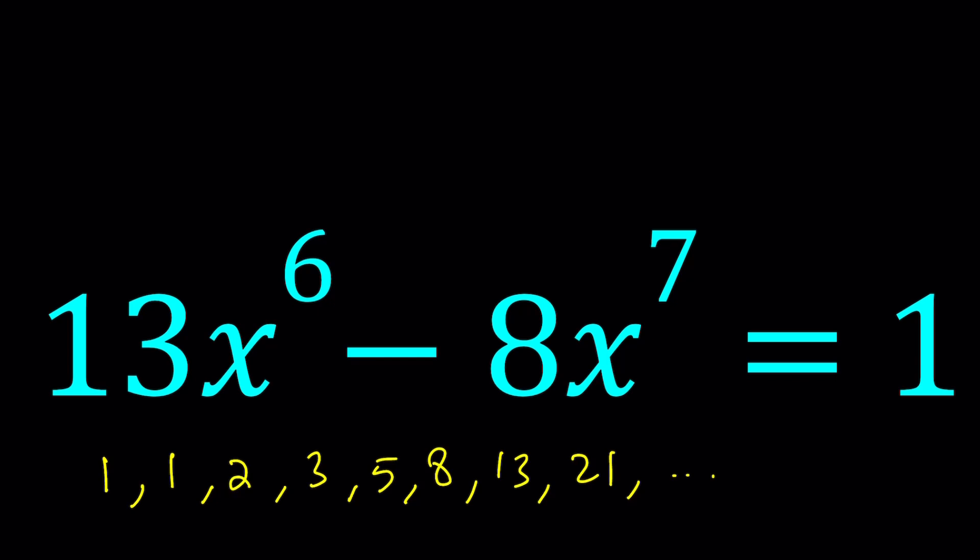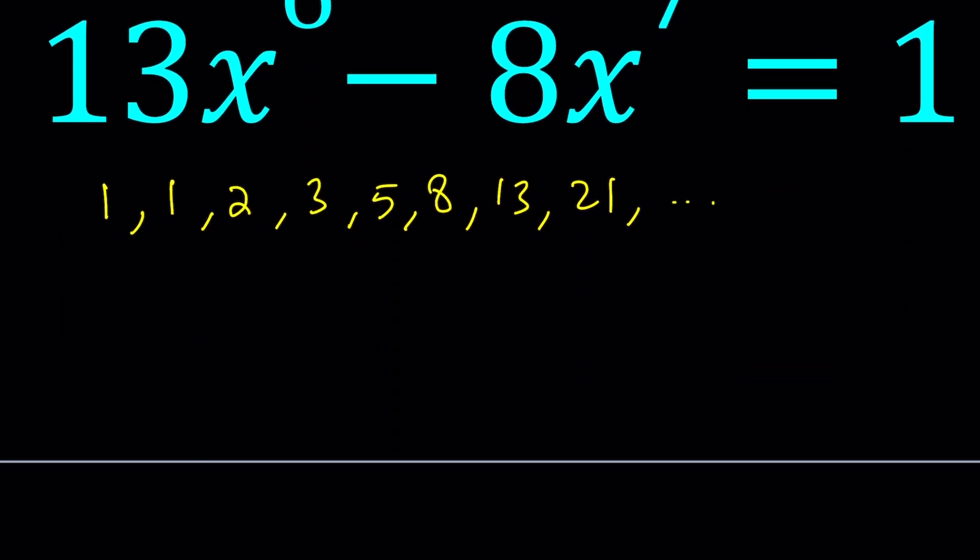If you remember the generating function for the Fibonacci sequence, you're going to realize that there is a quadratic equation involved in that formula. And also, if you think about the formula for the nth Fibonacci number, you're also going to notice something that I'm going to talk about. So, here's the thing.